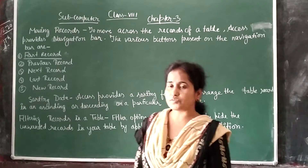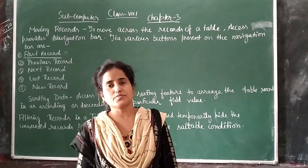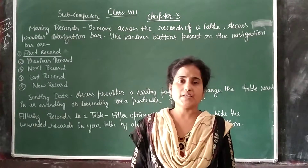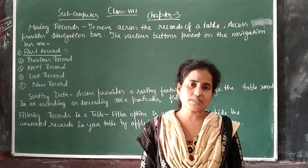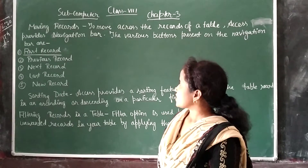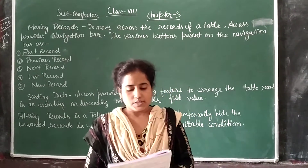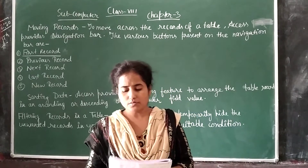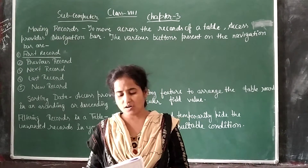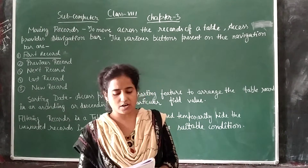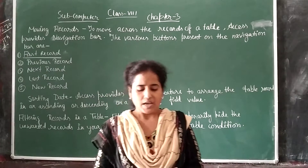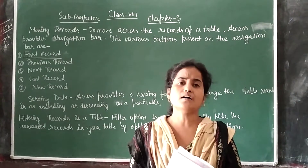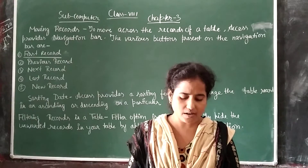First record — when you click on it, you can move to the first record. Previous record — you can move to the previous record. Next record — used to move forward by one record every time you click. Last record — used to take you quickly to the last record of the table. New record — it inserts a blank row in the data table to add a new record.